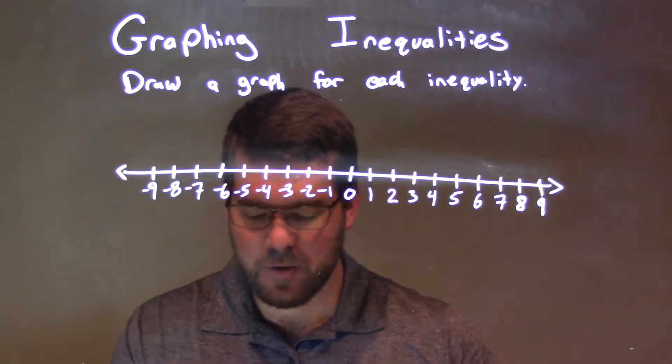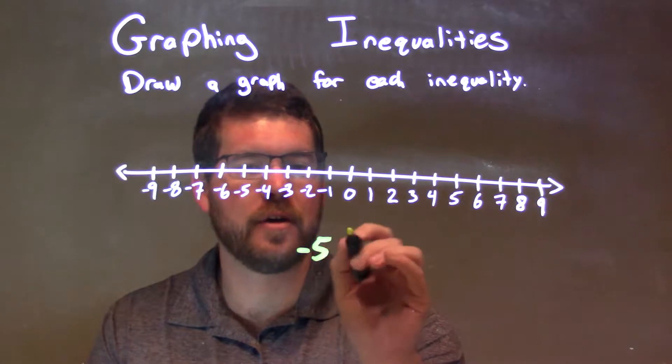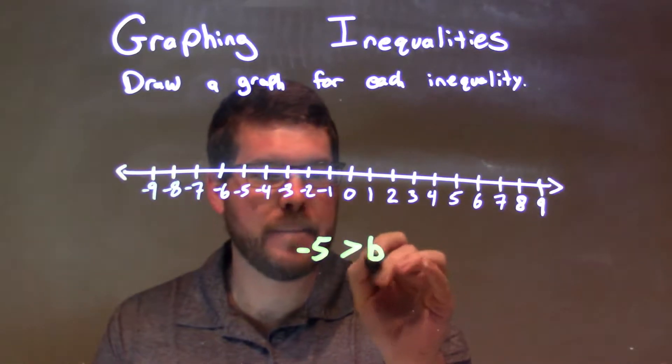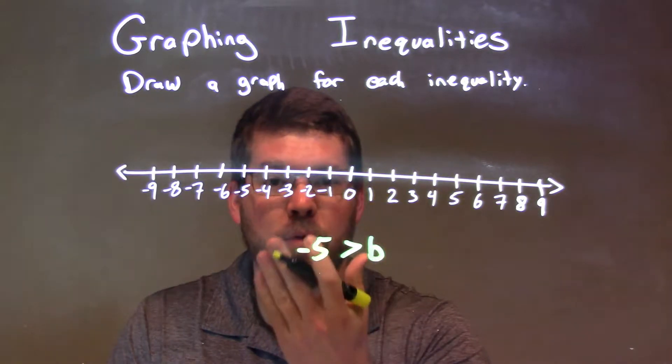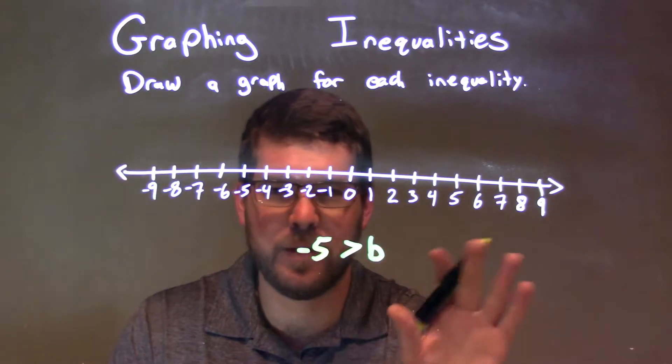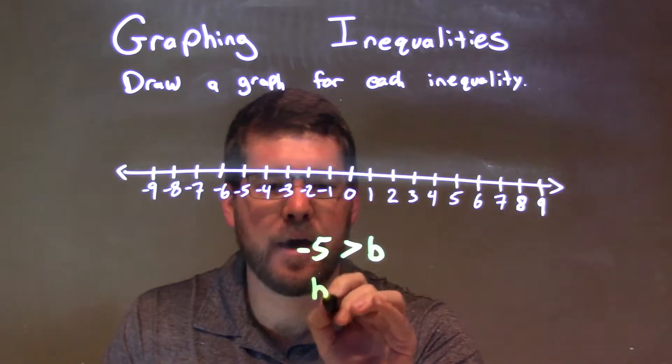If I was given this inequality, negative 5 is greater than b, the first thing I like to do is I want to get b written out front first. I don't like it being second. So I'm going to put b out here and negative 5 over here.